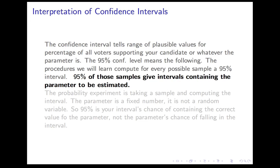There are two things people are confused about. First, the 95% — what's it a percentage of? It's a percentage of all samples. It's telling you 95% of samples will succeed, in the sense that they will give you a confidence interval that contains the correct value; 5% will fail. When you pick a sample, you have a 95% chance of picking one that will be successful in that sense. The probability does not refer to the chance of the parameter falling in that fixed interval. The parameter is some value — it's either in there or it isn't. It's the interval's chance of containing the parameter. Remember: 95% is a percentage of samples.